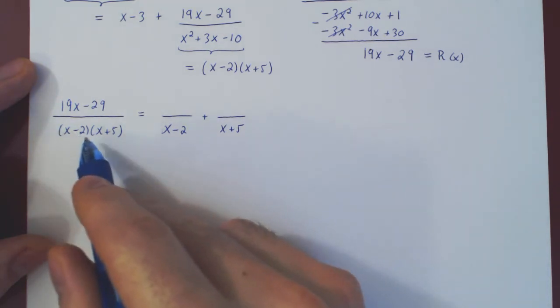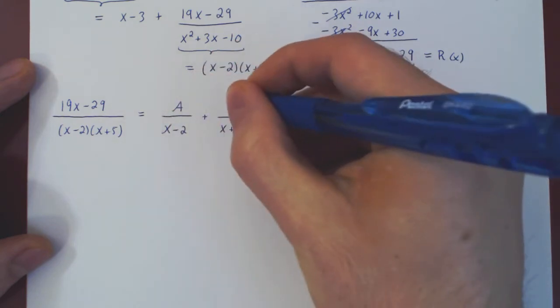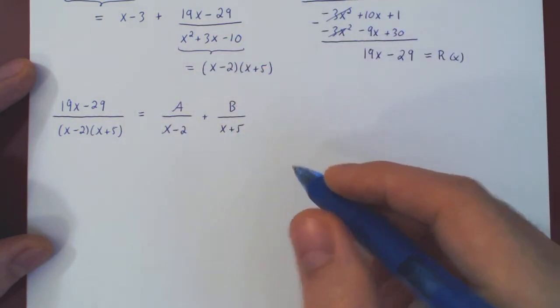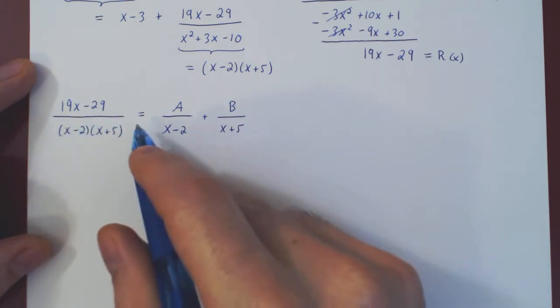Both factors are linear polynomials, so our numerator in each case is a constant. As always, we want an equality between polynomials, so let's multiply through both sides by our denominator.